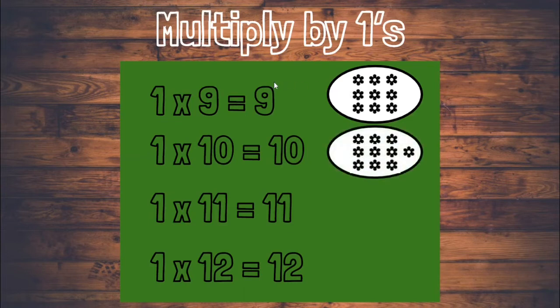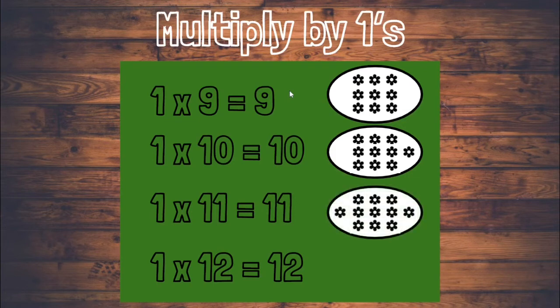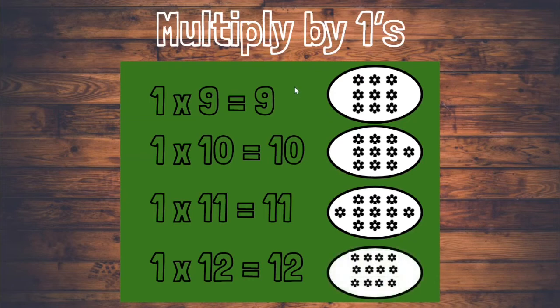One times ten means one group with ten flowers inside of the group, so we know that one times ten equals ten. One times eleven means one group with eleven flowers inside, and we know the product of one and eleven is eleven. One times twelve means one group with twelve flowers inside — one times twelve equals twelve.